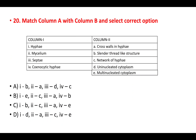Question 20: match column A with column B. Hyphae are slender thread-like structures. Mycelium is a network of hyphae. Septa are cross walls in hyphae. Coenocytic hyphae are hyphae having multinucleated cytoplasm. The correct answer is option C.